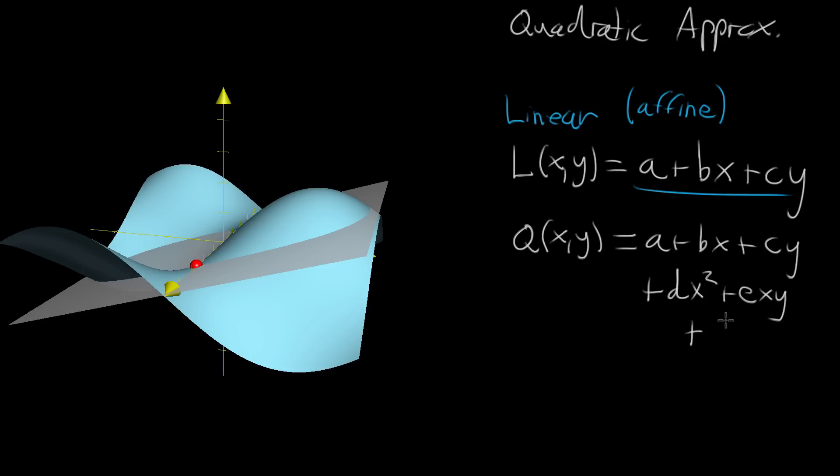And then we can add some other constant, say f, times y squared, where now we're multiplying two y's into it. So all of these guys, these are what you would call your quadratic terms. Things that either x squared, y squared, or x times y, anything that has two variables in it.